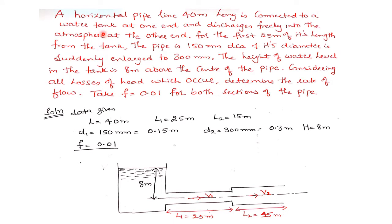We will solve one more problem on this. A horizontal pipeline 40 meters long is connected to a water tank at one end and discharges freely into the atmosphere at the other end. For the first 25 meters of its length from the tank, the pipe is 150 mm in diameter and its diameter is suddenly enlarged to 300 mm. The height of water level in the tank is 8 meters above the center of the pipe. Considering all losses of head which occur, determine the rate of flow. Take f = 0.01 for both sections of the pipe.